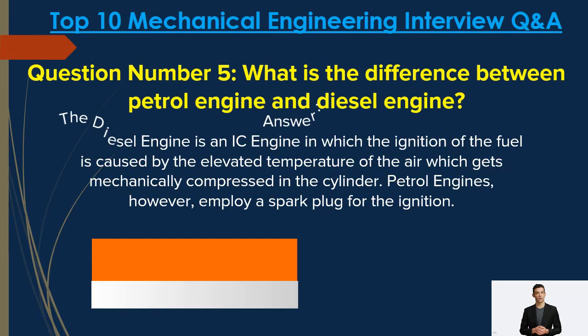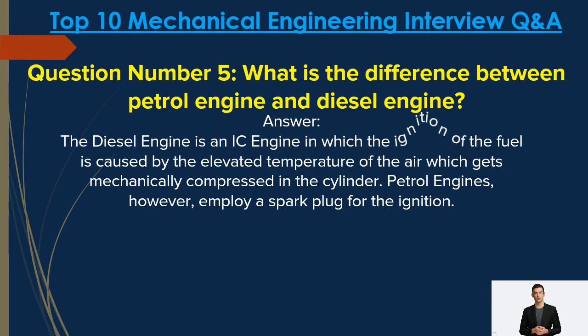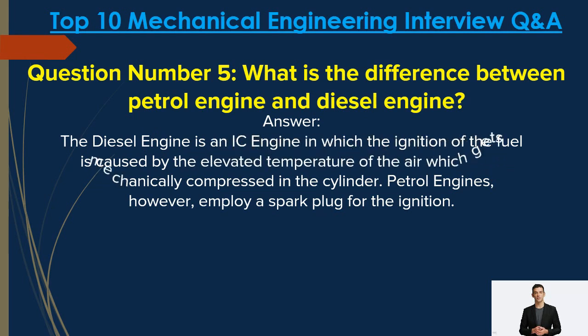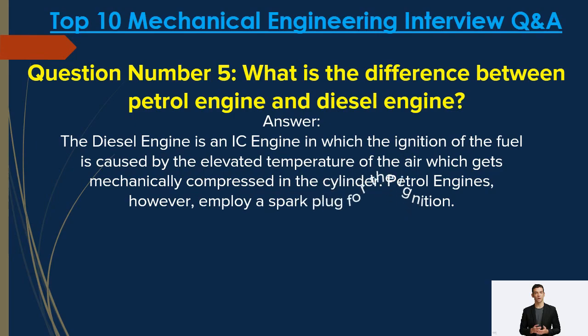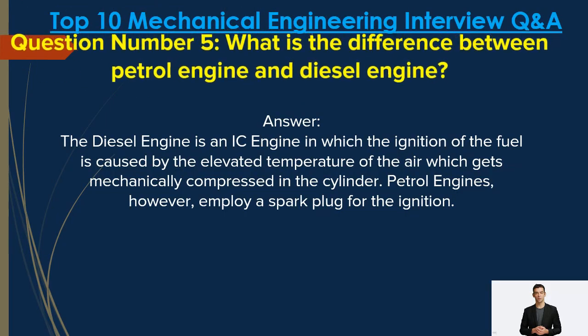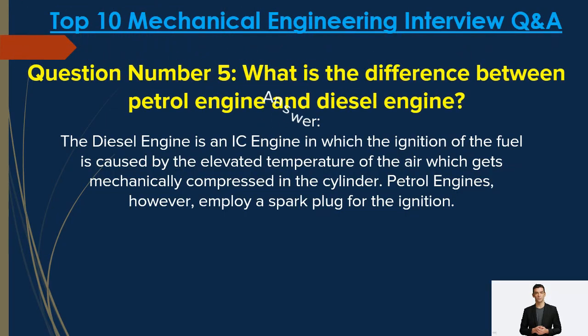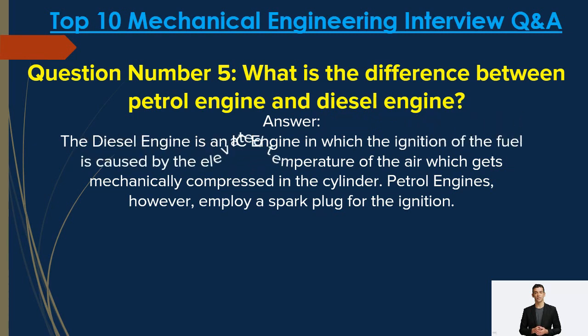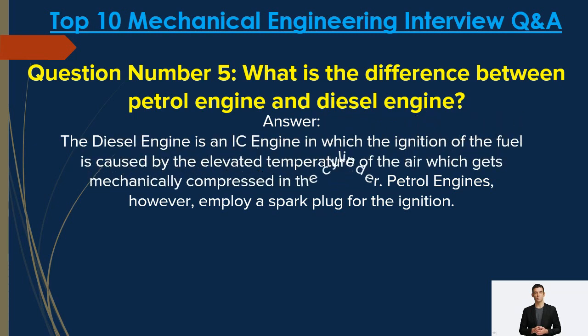Question number five: What is the basic difference between a petrol engine and a diesel engine? Answer: The diesel engine is an IC engine in which ignition of the fuel is caused by the elevated temperature of the air, which gets mechanically compressed in the cylinder. A petrol engine, on the other hand, employs a spark plug for ignition.